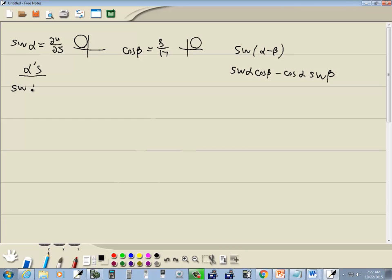So sine alpha is equal to 24 over 25. Now sine is equal to your y over your r. So let's use a Pythagorean identity. So we've got x squared plus y squared is equal to r squared. We're trying to find x. So I've got x squared plus y, which is 24 squared, is equal to r squared, which is 25 squared.